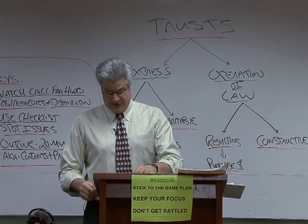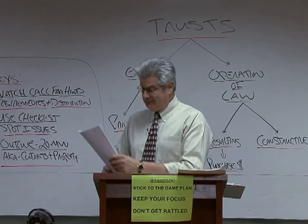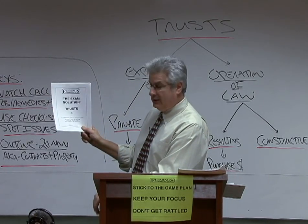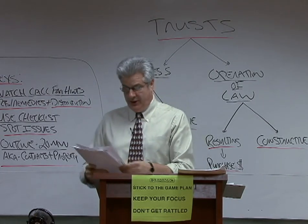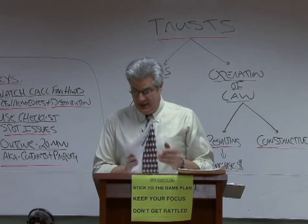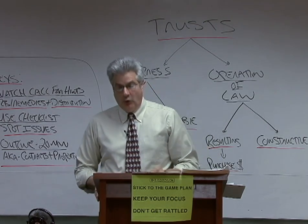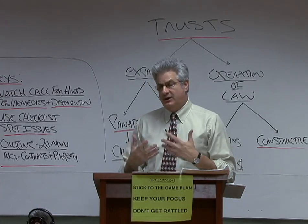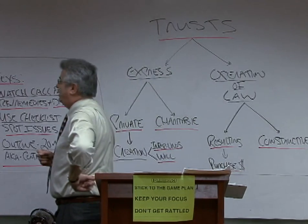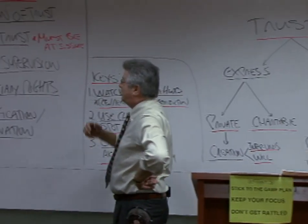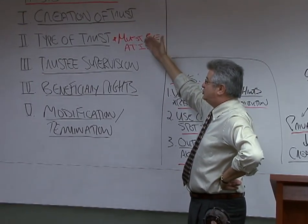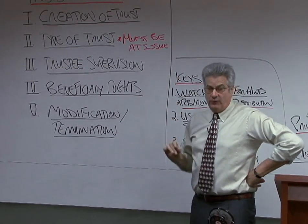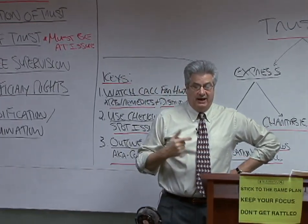What I'd like you to do is open up to page one of your outline. Where we're going today is really trying to achieve four goals in our exam solution that we do in all of our classes. The first thing we want to do on page number one is teach you a checklist for the class. What I have on the board over here is a trust checklist, which is really a mini version of what I have on page number one of the outline.